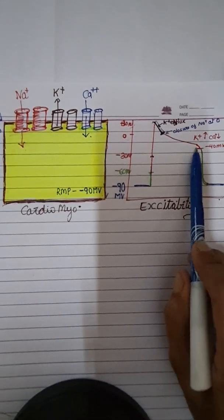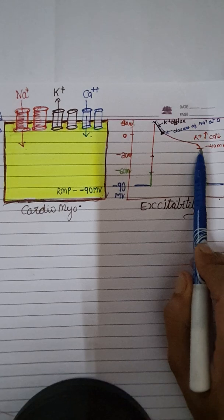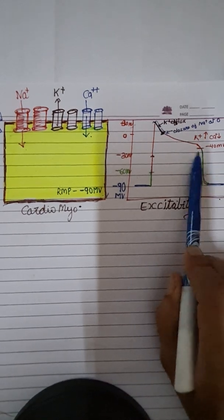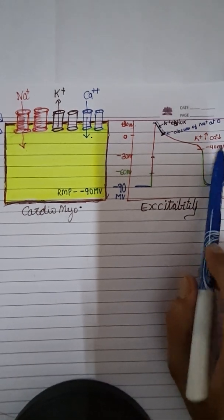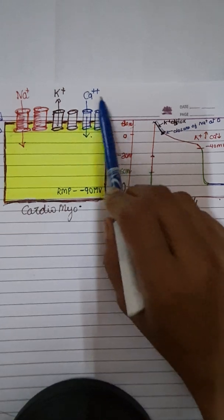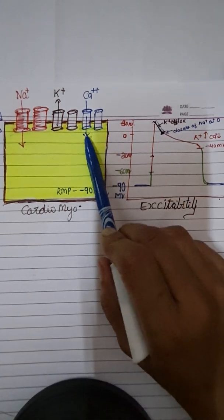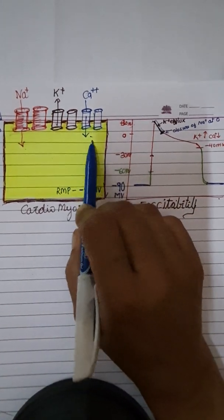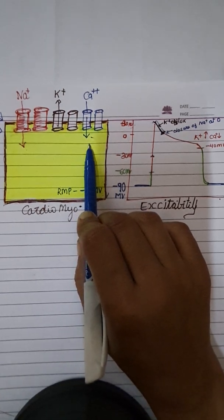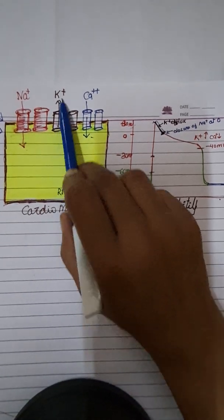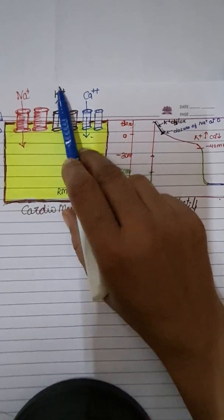At the level of minus 40 millivolts, calcium channels also close, which results in fast repolarization because potassium continues to efflux.